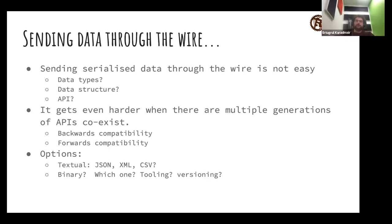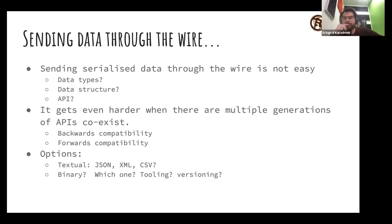You need to decide what kind of structure and technology you're going to use, how it's going to affect your data types and data structures, and the APIs you're going to build — all of which depends on the protocol you choose. And if you're planning to support multiple generations of the API, that gets more complicated. You need to think about backwards and forwards compatibility. Backwards compatibility is somewhat manageable, but forwards compatibility is not easy to sort out.